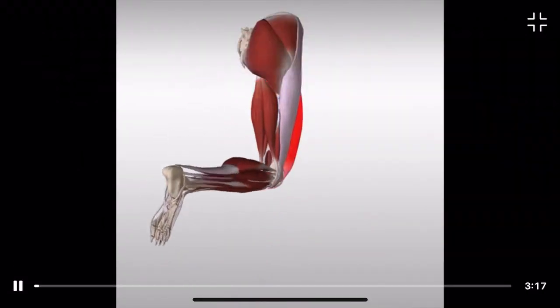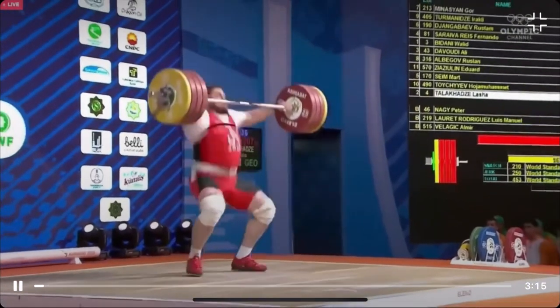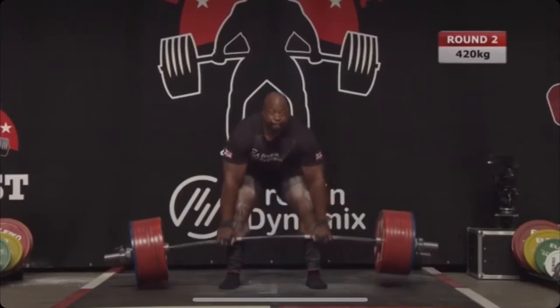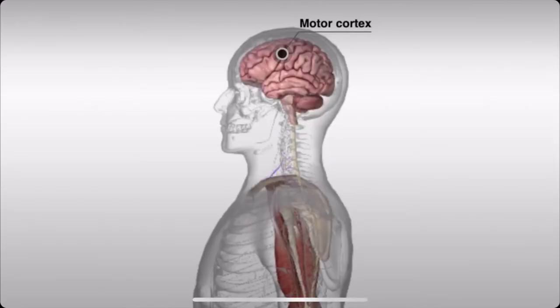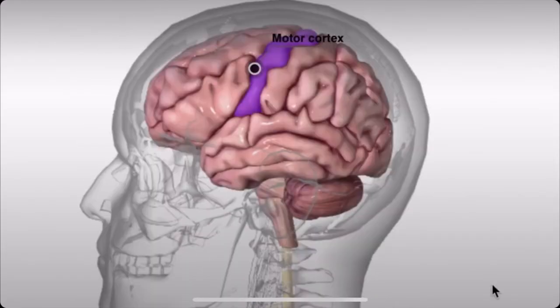This video is about how a muscle contracts, and as much weightlifting as everyone's doing, I figured you guys might find this interesting. When you decide to make a muscle contract, it all starts in the brain at the primary motor cortex.